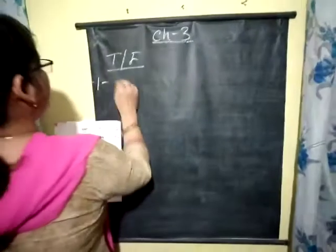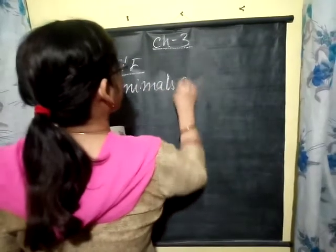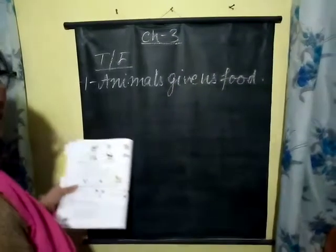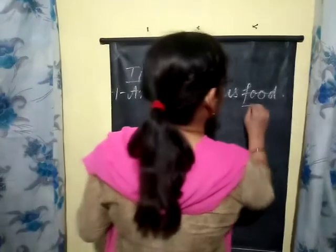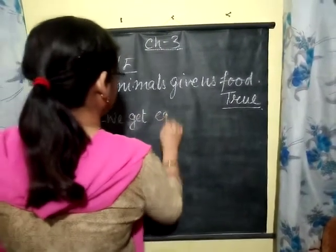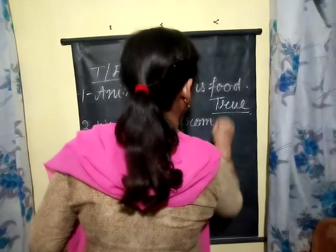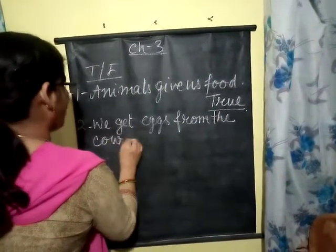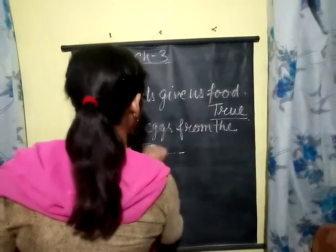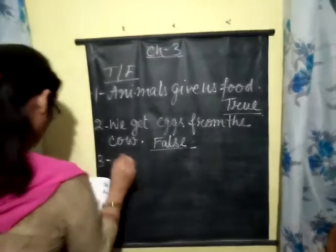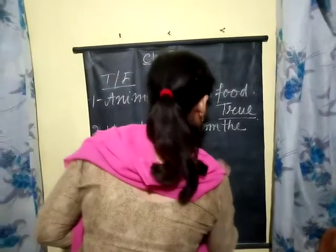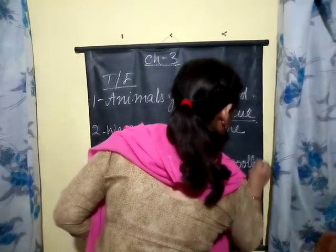Now, true and false. Number one: animals give us food. Number two: we get eggs from the cow. Number three: we use wool to make wool and clothes.